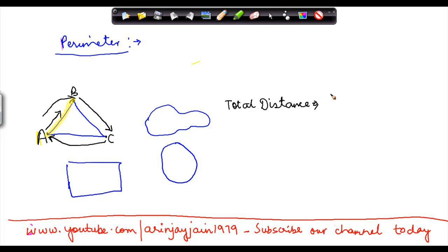So I can write this as length of A to B plus the length which I covered when I moved from B to C. Therefore, I can write this as BC plus the length that I covered as I moved from C to A. And I can write this as AC.